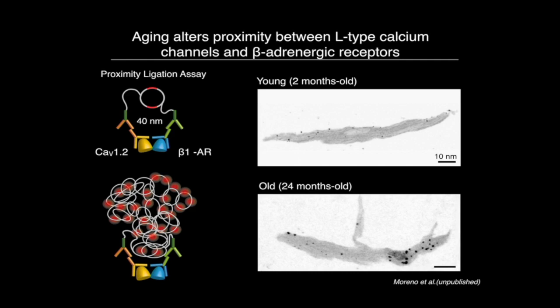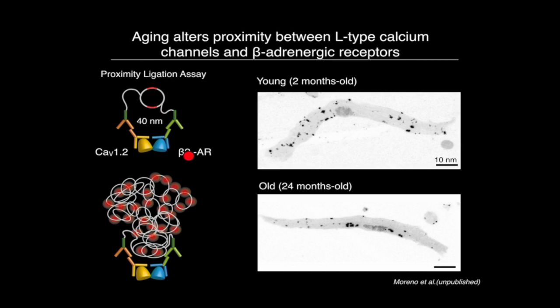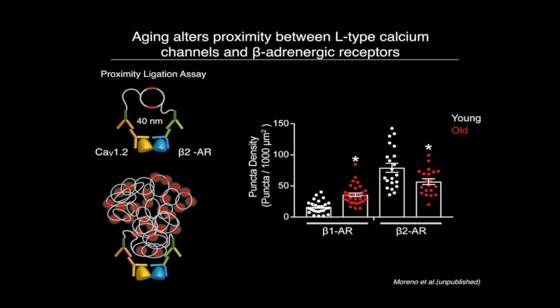Comparing young and old animals, we didn't see a big change in the proximity between CAV1.2 and the beta-1 adrenergic receptor. But when we evaluated the proximity between CAV1.2 and the beta-2 adrenergic receptor, we saw a big reduction in proximity in old animals. This suggests that during aging there are many changes in how proteins are organized at the plasma membrane — how they cluster and how they arrange relative to other proteins important for their modulation.